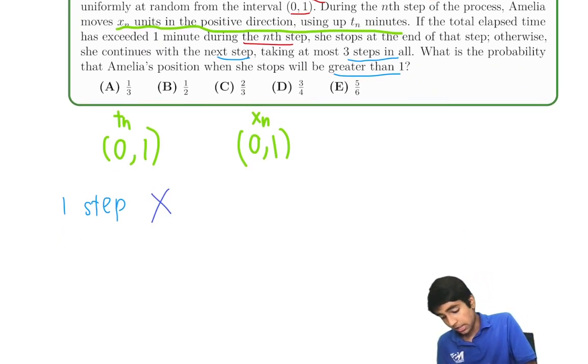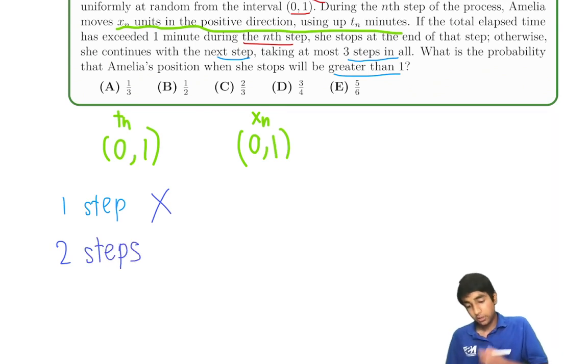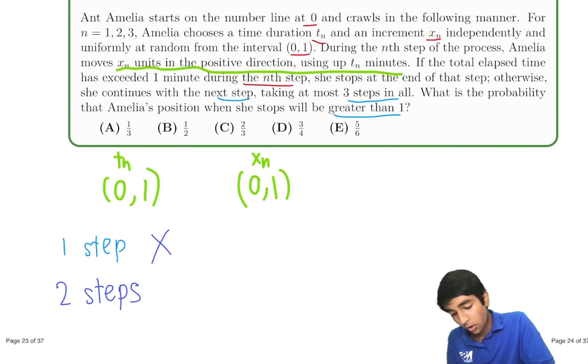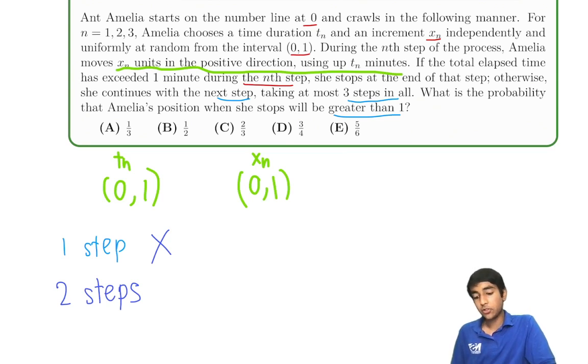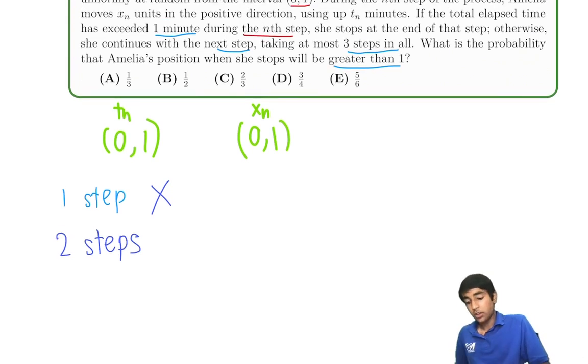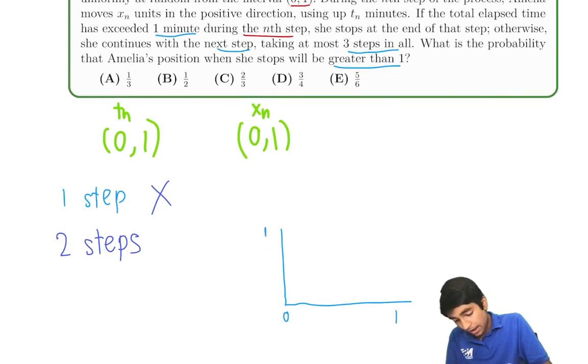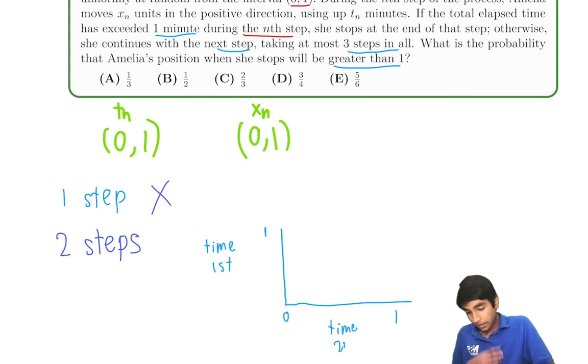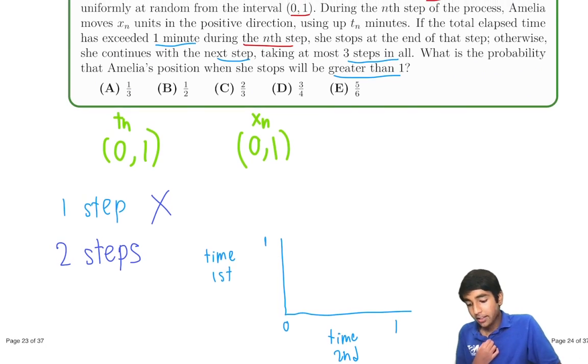What about two steps? Each step is going to take somewhere between 0 and 1 minutes, right? So for us to stop after two steps, we must exceed a minute. So how do we do this? How do we find it out? This is geometric probability. 0,1 and 0,1. This is the amount of time for the first step, time for the second step. And we're trying to find when it will exceed one minute, the total time.